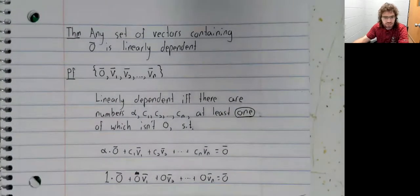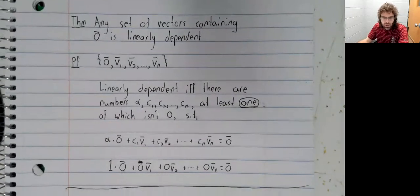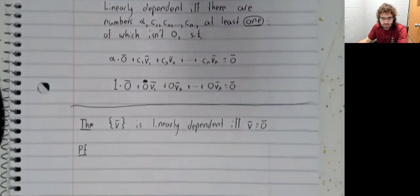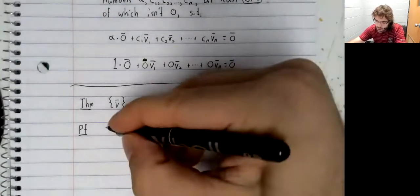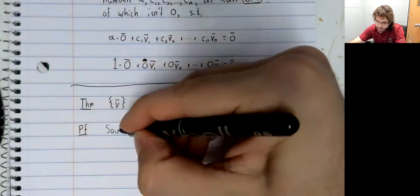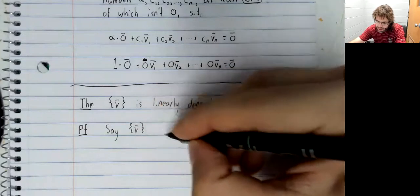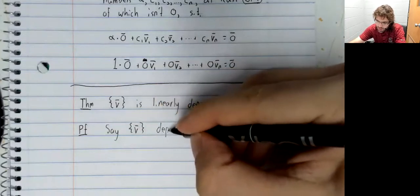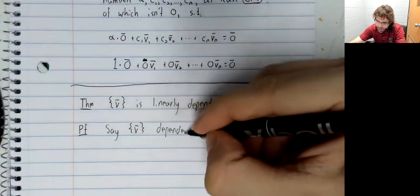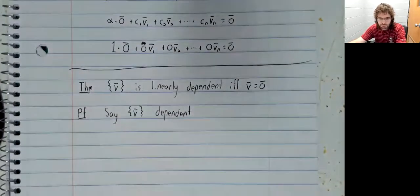According to this theorem, any set containing the zero vector is linearly dependent. So let's now go the other way. Say that this set is linearly dependent.